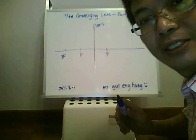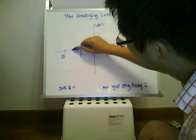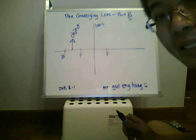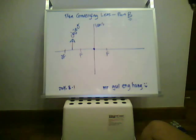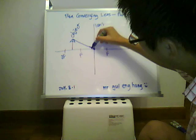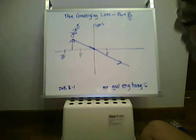Today we're going to learn how to draw the ray diagrams if the object is between f and 2f. We call this the object. As in Part A, we always draw the first line through the center of the lens, and this line is a straight line that does not bend. Using a ruler, draw a straight line that does not bend — that is the first ray, it's a light ray.